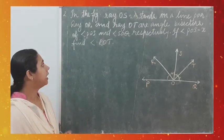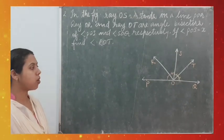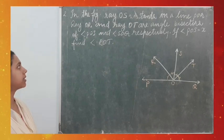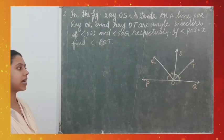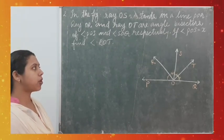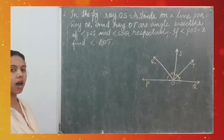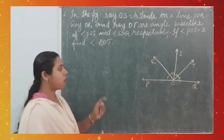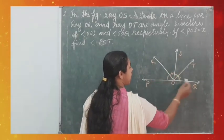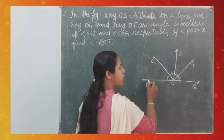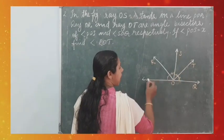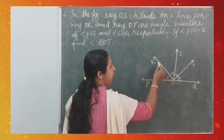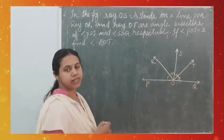The next question: in the figure, ray OS stands on line POQ. Ray OR and ray OT are angle bisectors of angle POS and angle SOQ respectively. If angle POS = x°, find angle ROT. POQ is a straight line; OS is a ray standing on it. OR bisects angle POS and OT bisects angle SOQ.